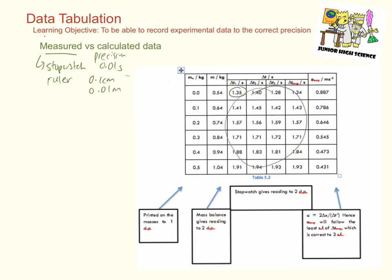Mass is measured by using various weighing balances. So as you can see here, the mass data over here is given to two decimal places. This is because the mass balance that we use gives us a reading precise to just two decimal places in terms of kilograms.